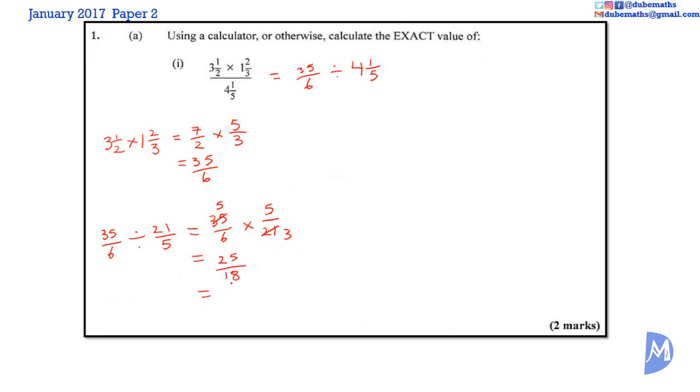Converting to a mixed number. 18 into 25, 1. And we have 7 remaining. 1 and 7 over 18. The answer is 1 and 7 over 18.